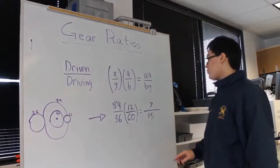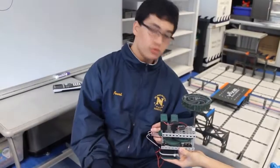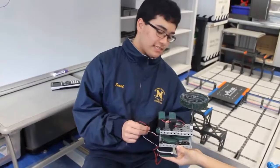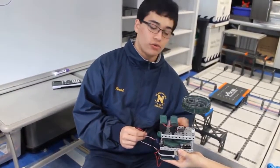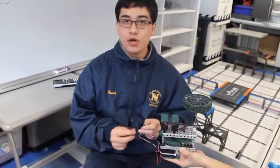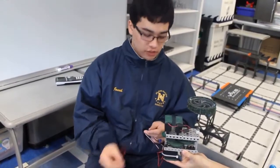This gear ratio, which was used for a shooter last season, has a 60 tooth gear driving a 12 tooth gear on the same axle as a 60 tooth gear driving a 12 tooth gear. That means that the overall gear ratio is 1 over 25, or 25 to 1 gear ratio, which means that it's geared for speed.